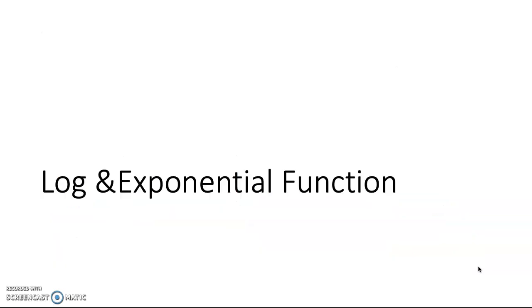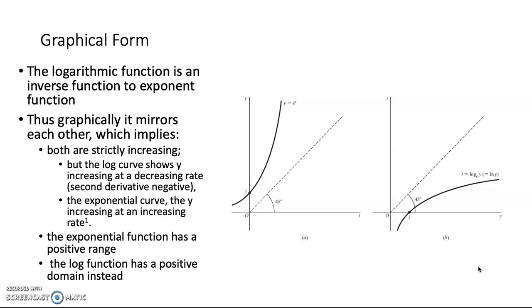Now, about the relation between log and exponential function: we can see it from graphical form — log and exponential functions mirror each other. This mirroring implies that for the exponential function, it has a positive range; the y-values are all in the positive range, and it goes asymptotic. While the logarithmic function has a positive domain. Both are increasing curves. The concept of increasing and decreasing curves we will discuss further when we talk about derivatives.